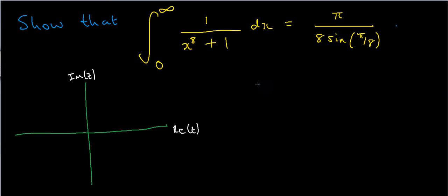In this video we're going to be looking at another contour integral. We're asked to integrate 1 over x to the 8 plus 1 dx over the interval from 0 to infinity, and I'm asked to show that that's equal to π over 8 sin(π/8). The first thing I'm going to do is let f(z) be equal to 1 over z to the 8 plus 1.